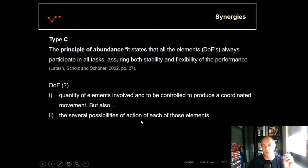But also, you may find the several possibilities of action of each of those elements. For instance, my shoulder has a considerable amount of possibilities of action, whereas my elbow has less possibilities of action when compared to my shoulder. Here, we will focus more on this one: degrees of freedom as possibilities of action of the elements involved.